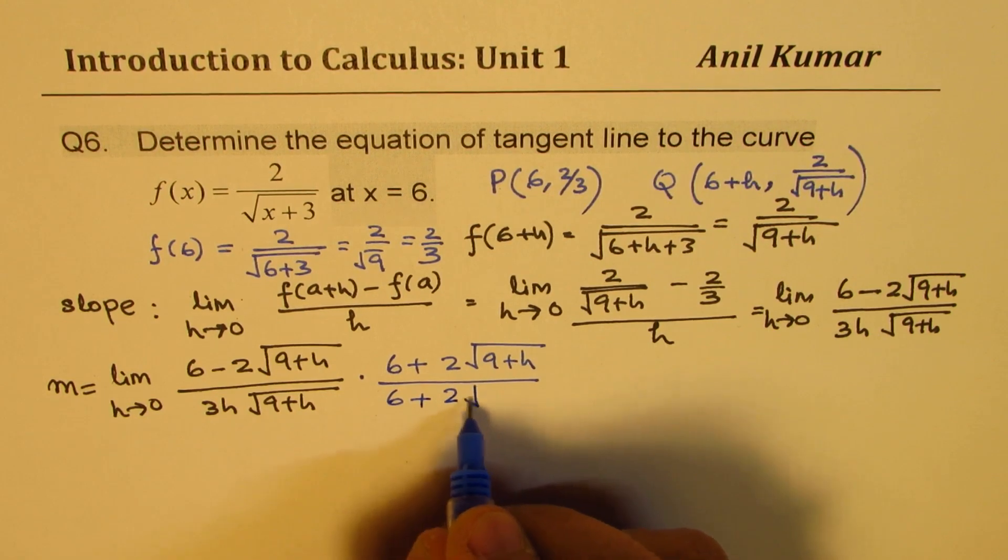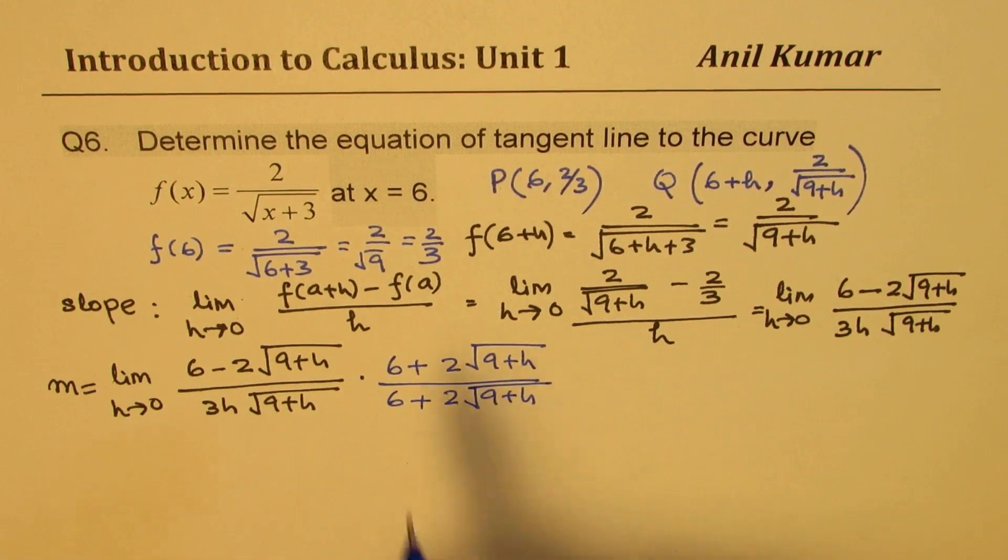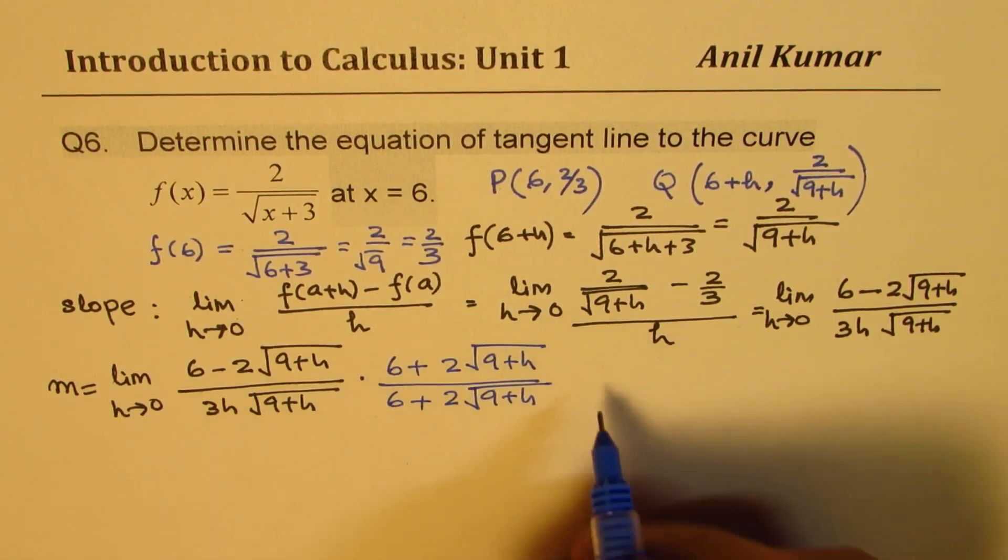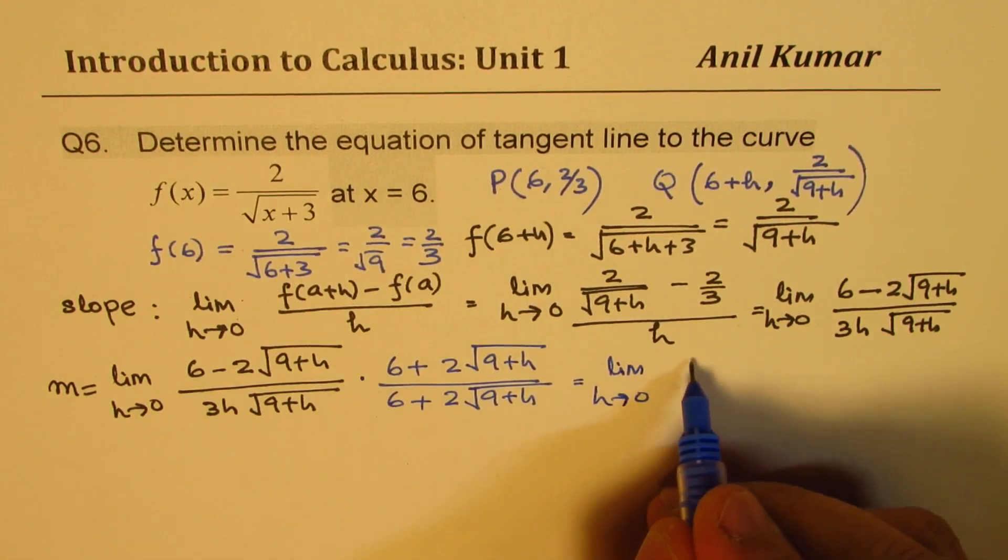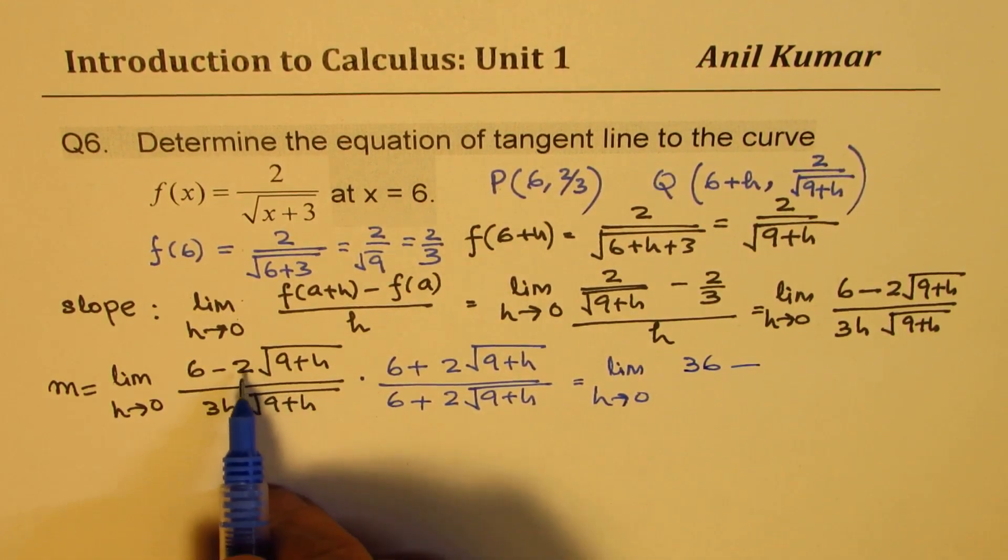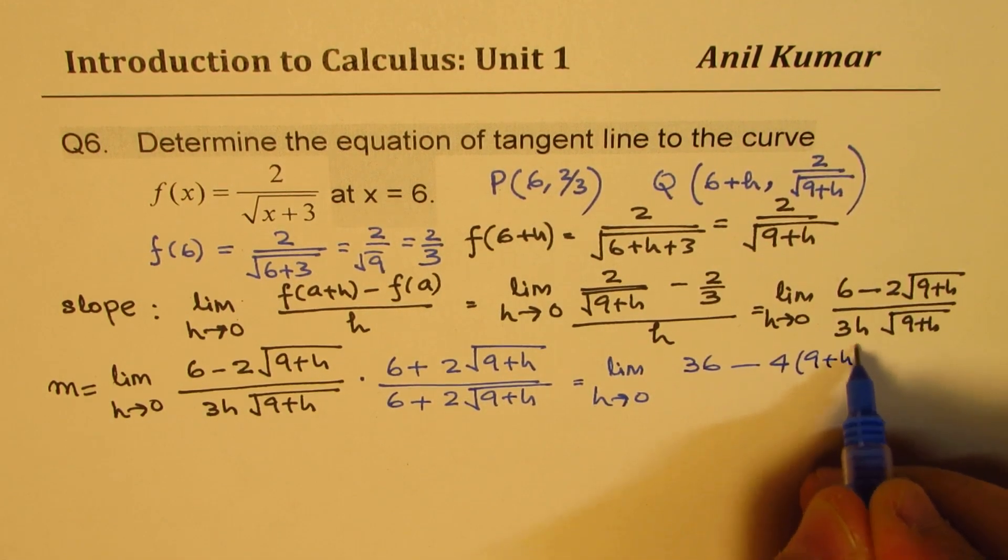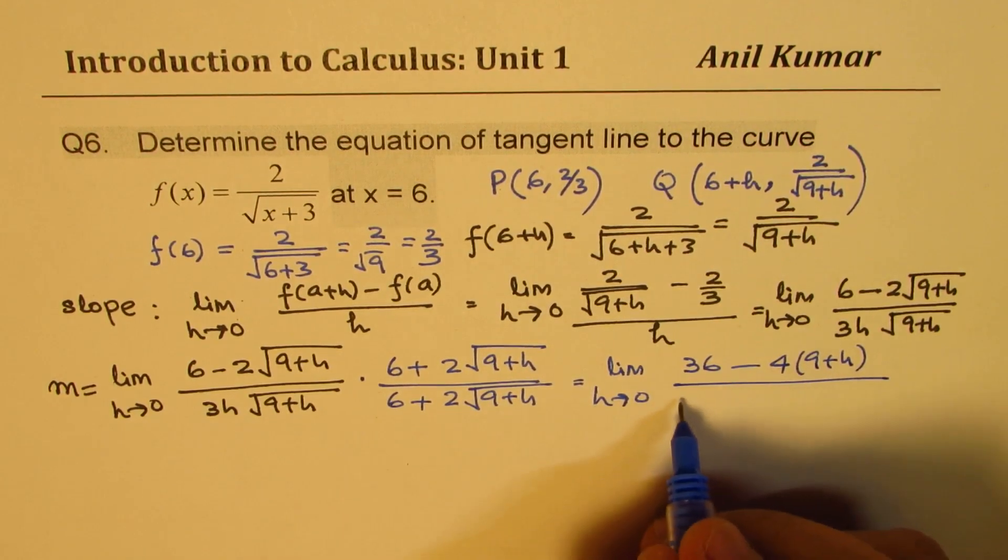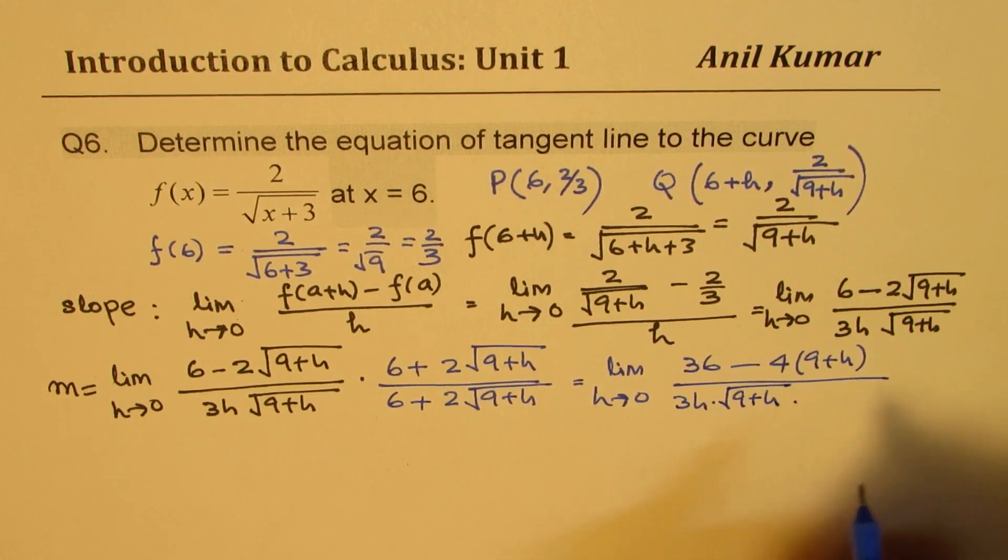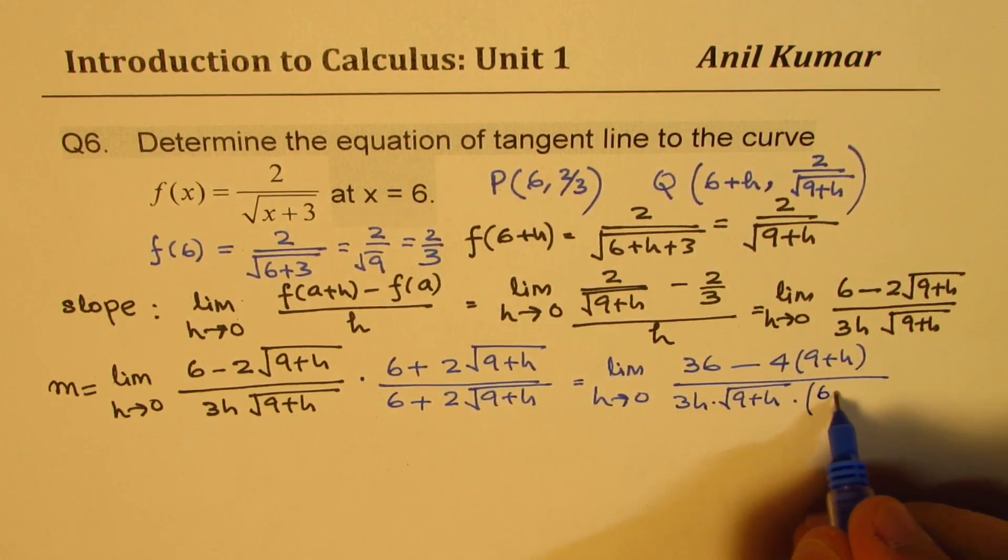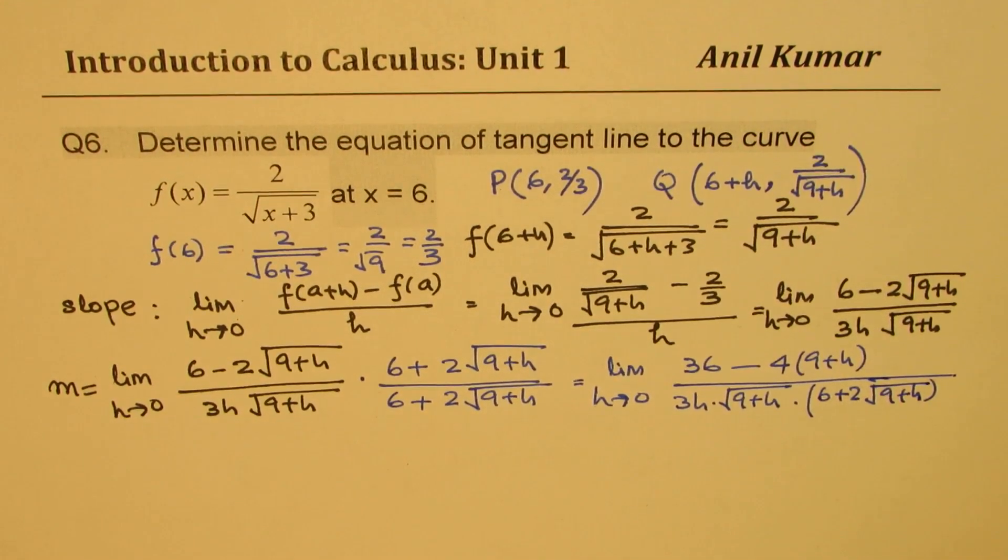So we have this expression which is slightly bigger numbers anyway. So when you do the numerator difference of squares, you could write this as limit h approaches 0: (36 - 4(9+h)) over all this, which is 3h√(9+h) times (6 + 2√(9+h)).